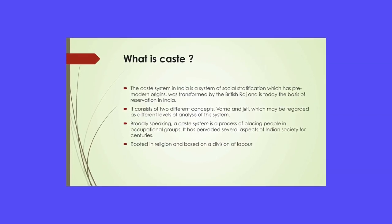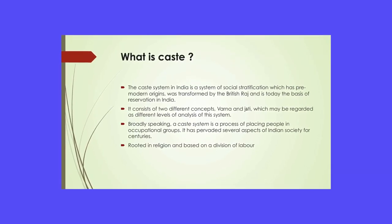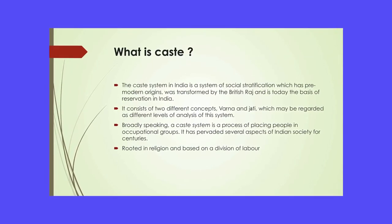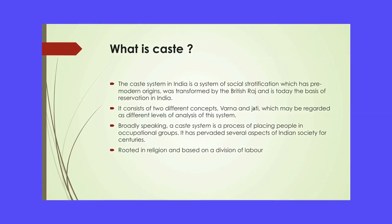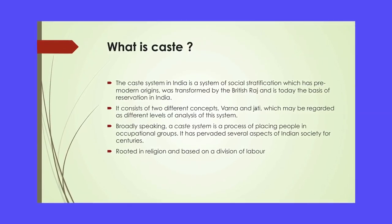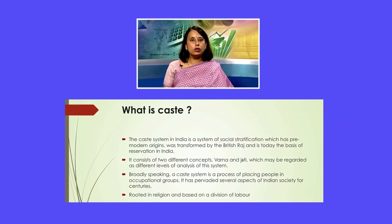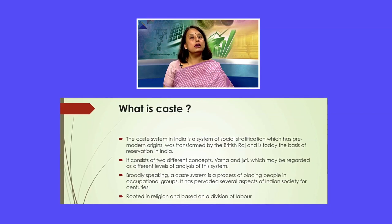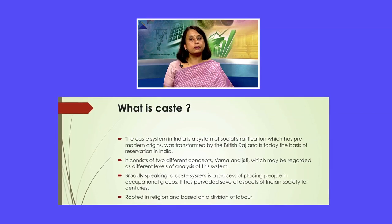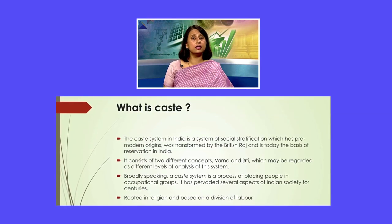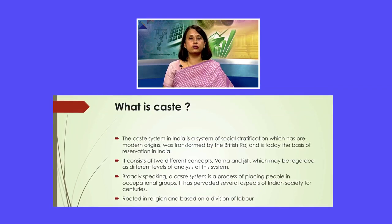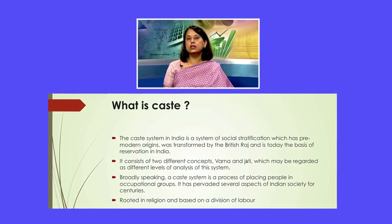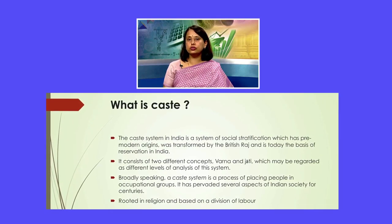The way we know the caste system today was shaped by the British. In 1901, the British conducted a caste-based census of the Indian population. Broadly, the caste system is a process by which people are placed into different occupational groups. It has prevailed across several aspects of Indian society for centuries, and the argument given is that it is rooted in religion and based on a division of labor.